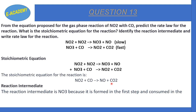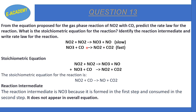The reaction intermediate is NO₃, which is produced in the first step and consumed in the second step and does not appear in the overall rate equation. Step 1: 2NO₂ → NO₃ + NO (slow). Step 2: NO₃ + CO → NO₂ + CO₂ (fast).